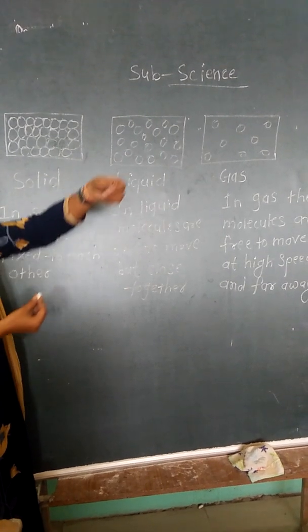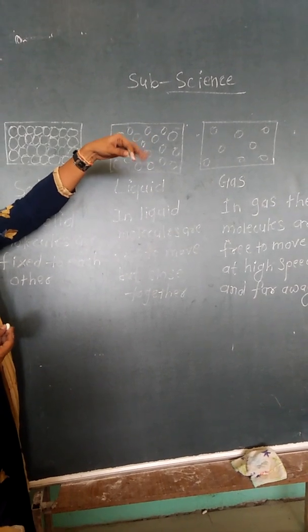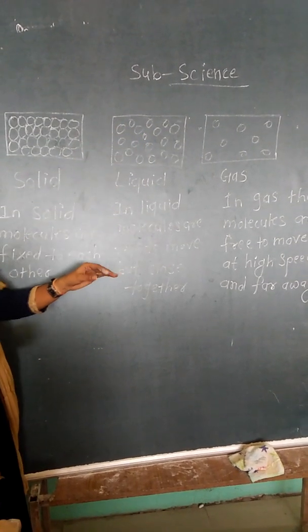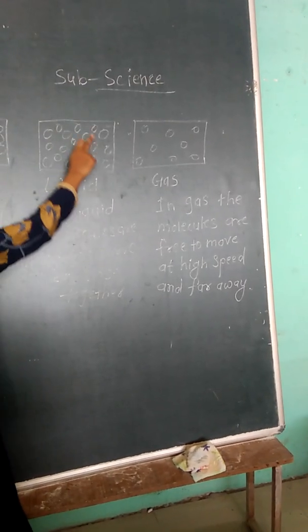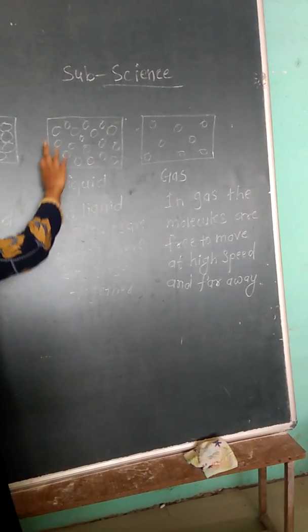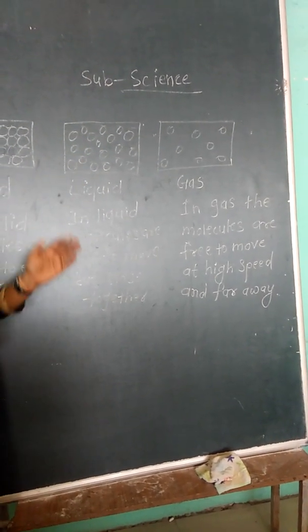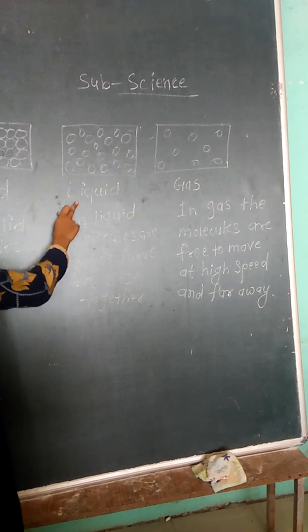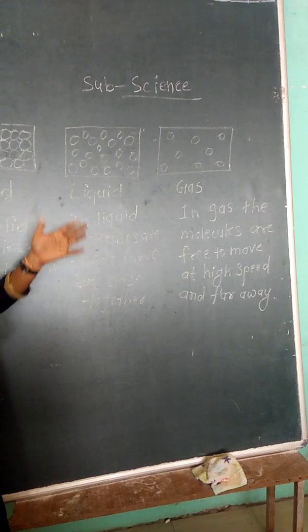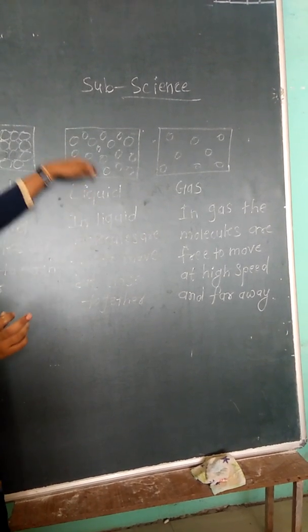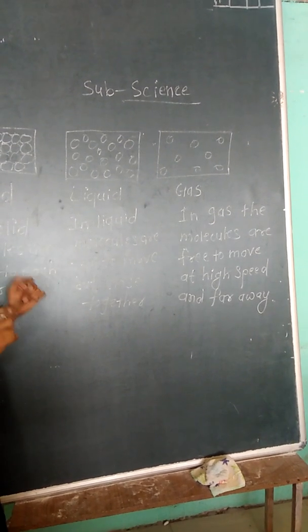And this molecule is freely moved. So this is the gaseous state. Now we have to see the liquid, liquid form. This molecule is freely moved. In liquid form this molecule is free to move but close together. In liquid form the molecule is moved, but they have to shape the container. For example,